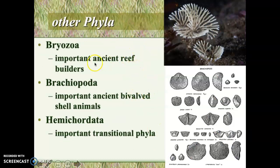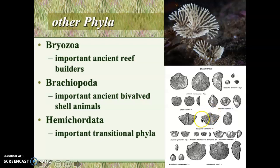Some other important phyla you might find in the ocean, which the book doesn't mention much, are the bryozoans — visible in the upper right, they look kind of like colonial corals but they're not. And the brachiopods, on the lower right, were a very common organism in the fossil record. Most brachiopods went extinct about 250 million years ago, but there are a few species still in the ocean today, including an organism called lingula that some people may have seen.